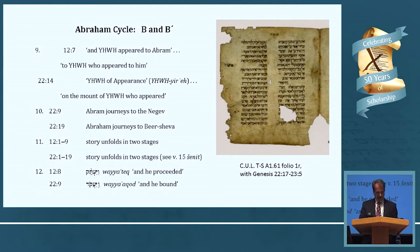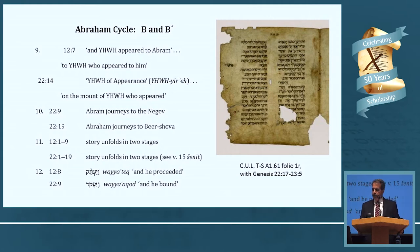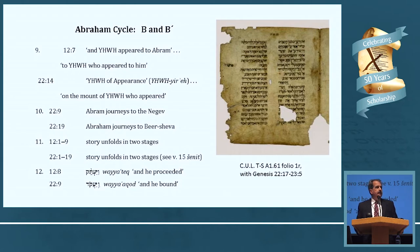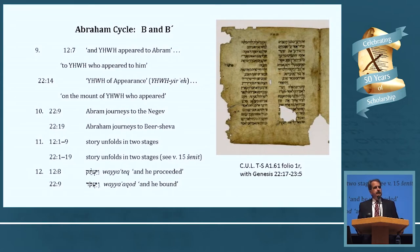There's another beautiful manuscript image here, reminding us that not all manuscripts come to us intact — some have holes from the ravages of time. God appears to Abraham in both units B and B prime. At the end of chapter 12 he goes to the Negev; in chapter 22 he goes to Beersheba, the largest city in the Negev. Both stories also unfold in two stages, both unit B and B prime.